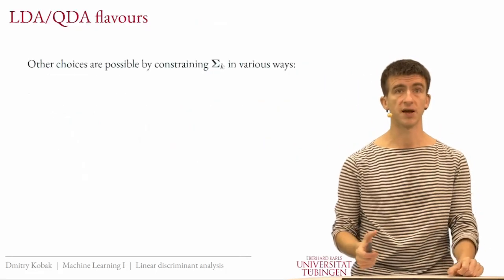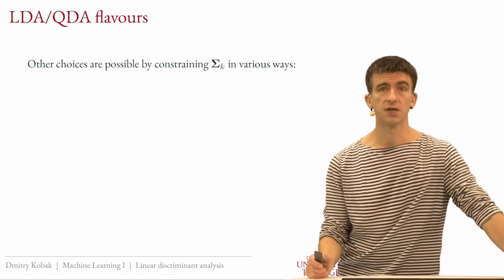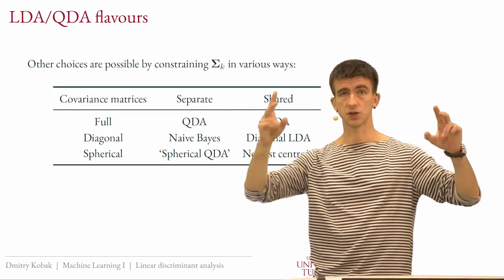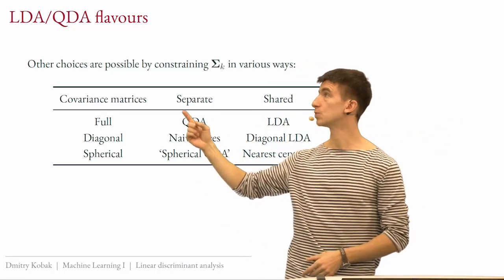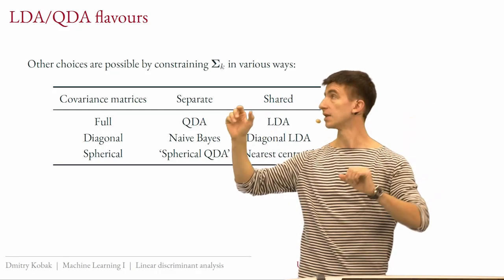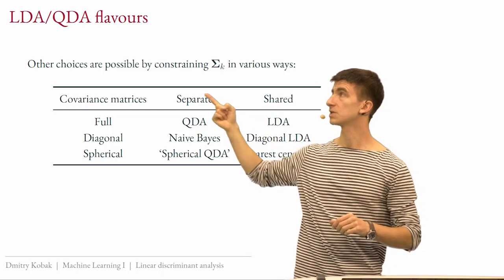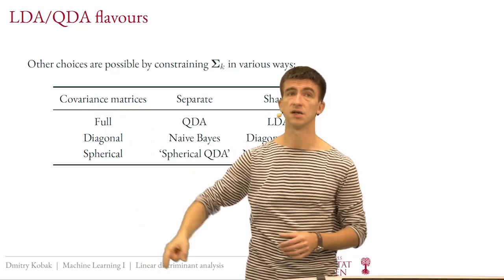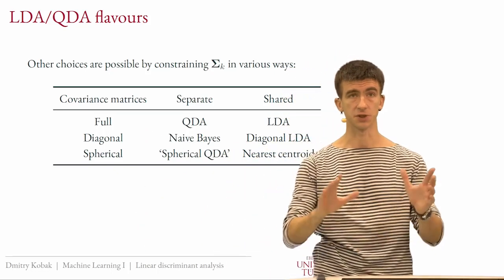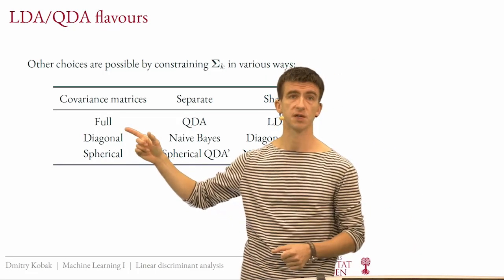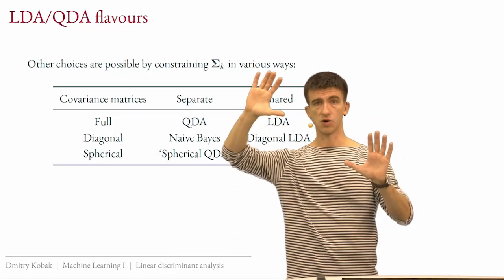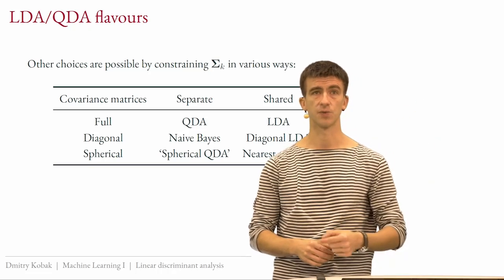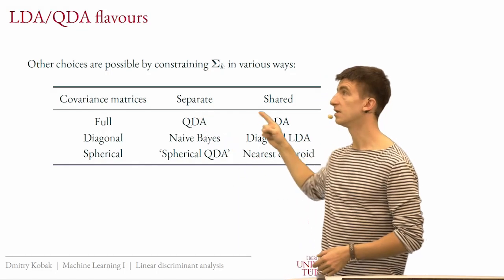There are actually even more choices within this framework depending on how you model the two covariance matrices. One dimension is whether you assume shared or separate covariances; another is how complex the covariance structure is: full covariance (no constraints), diagonal covariance (zero off-diagonal, different diagonal values), or spherical covariance (same value everywhere on the diagonal). This gives six options.